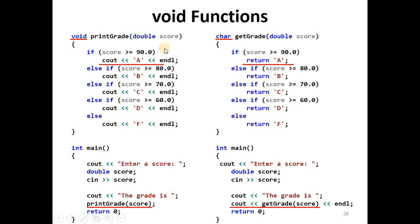This is the main code of the two functions, or two programs. Each program has a main and a function. The first program has a function that returns void, does not return anything. The second program calls get grade which returns a character.